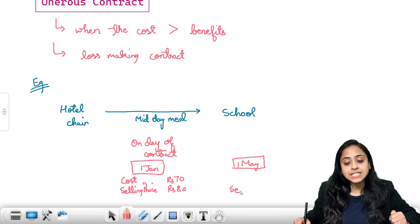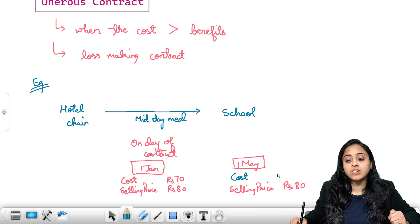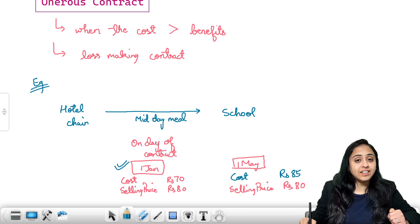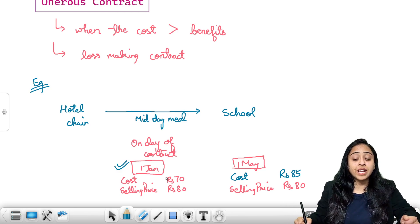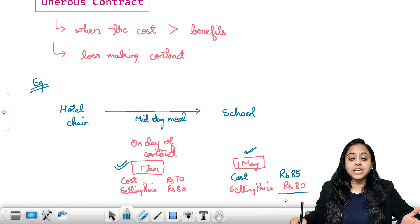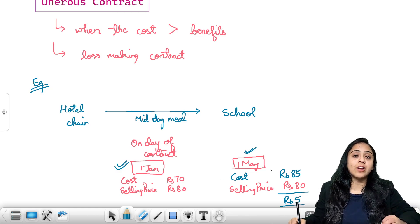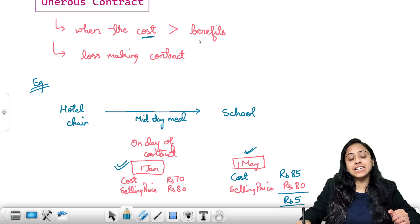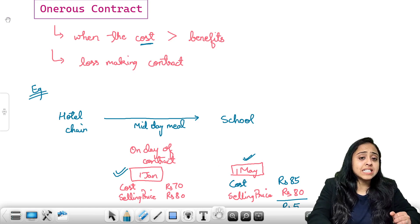The selling price remains exactly the same at 80 rupees as per the contract, but due to some reason the cost has now become 85 rupees. Earlier the cost was lower and the selling price was higher, so it was a beneficial contract. But at the time of execution there is a net loss of 5 rupees per meal — this is how it has become a loss-making, or onerous, contract.